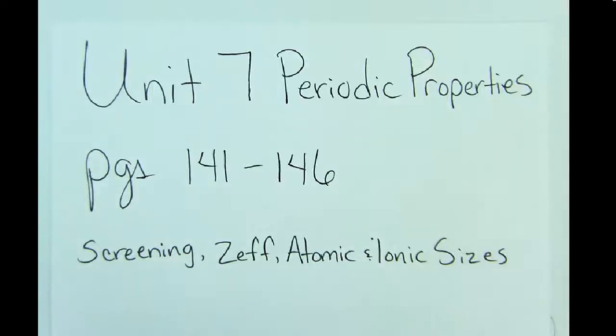Unit 7, Periodic Properties, pages 141 to 146, focusing on electron screening, effective nuclear charge, and atomic and ionic sizes.